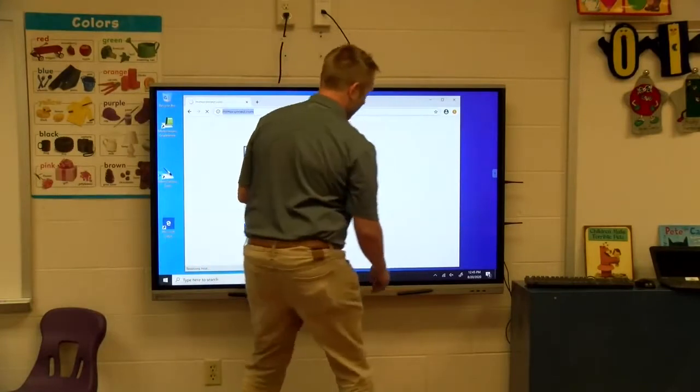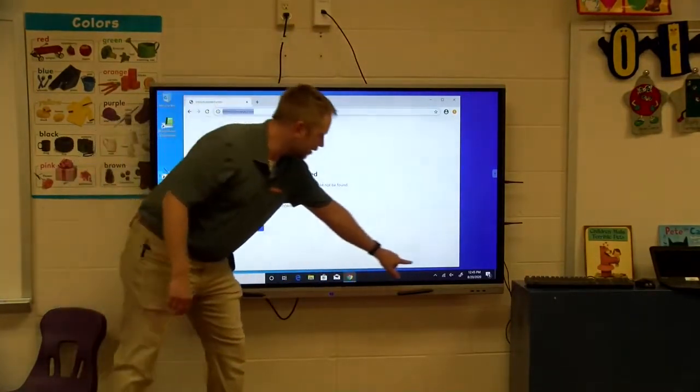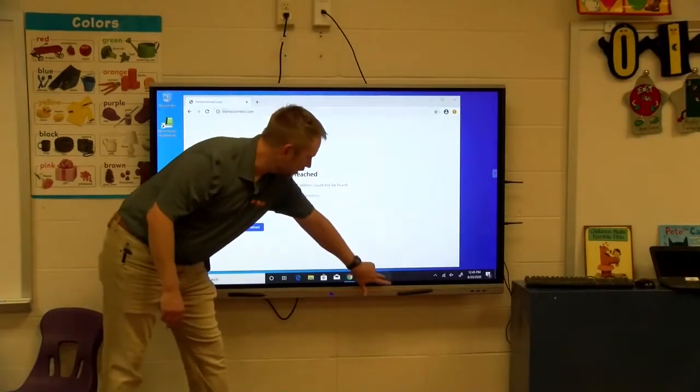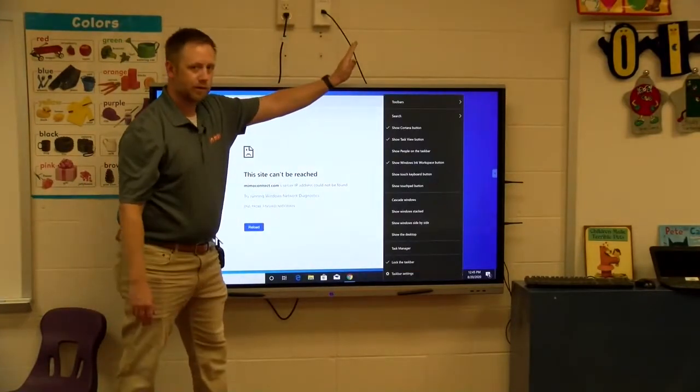However, if I do need to use the on-screen keyboard, here's how you do it. Down here at the very bottom of Windows 10, there's a black bar and if you press and hold, which is right clicking, I get some options.